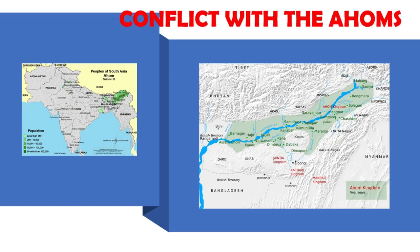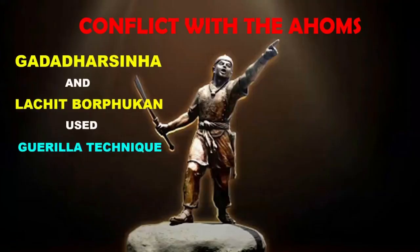Conflicts of Aurangzeb with the Ahoms: In the 13th century CE, the people of the Shan community settled in the valley of the river Brahmaputra and established their kingdom there. They were locally known as the Ahom people. While Aurangzeb ruled, the Ahoms had a prolonged struggle with the Mughals. The Mughals attacked the Ahom region. The Ahoms united under the leadership of Gadadhar Singha, and commander Lachit Borphukan gave an intense battle against the Mughals.